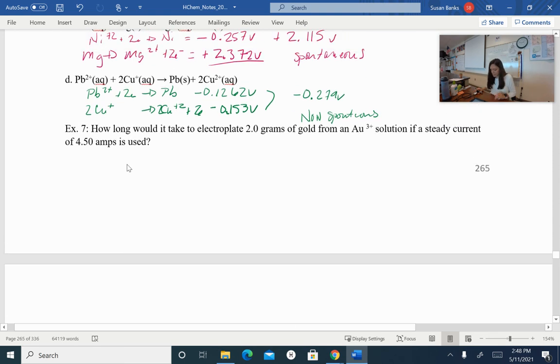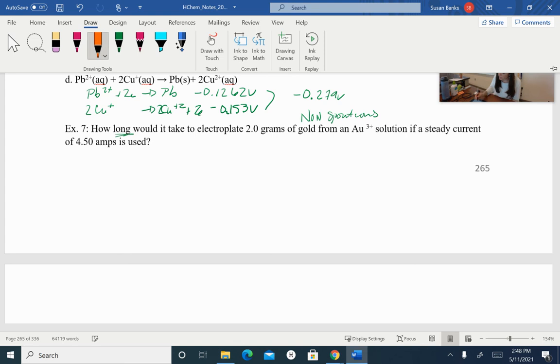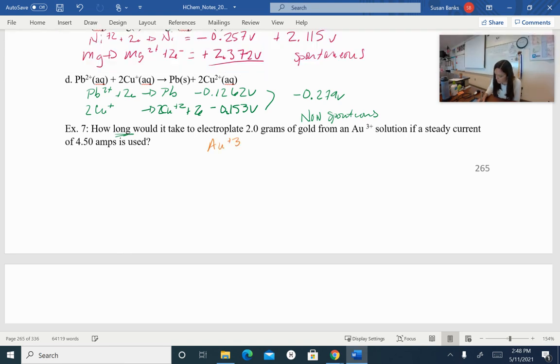And this last little bit, we're going to learn how to do time with these Faraday questions. So how long would it take to electroplate two grams of gold from gold plus three solution if a steady current of 4.5 amps was used? So let's look at the equation first. So we're going from gold plus three to solid gold. So in order to go to solid gold, I'm going to need three electrons to do that. So my ratio is going to be three electrons for every one mole of gold. So let's start with our grams of gold that we have right here. So we have two grams of gold, and we need to get it into moles.